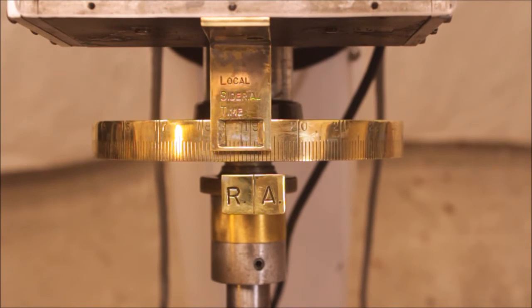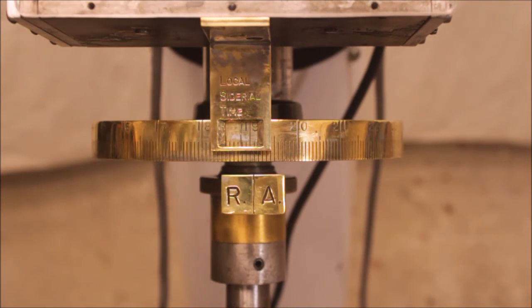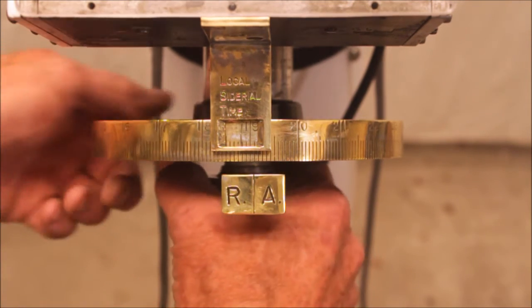This thing also has an extremely strange setting circle. First of all up at the top of the mount it's got a fairly standard hour angle type of right ascension circle. And then it's got this one down here.